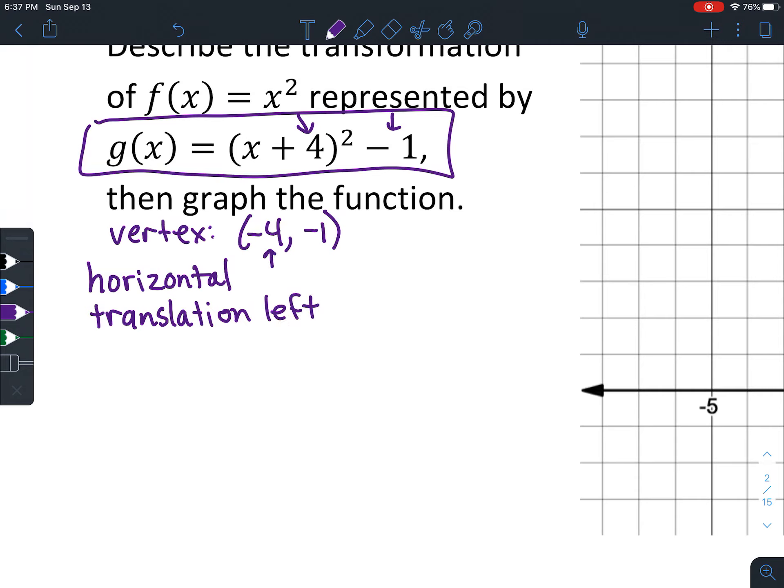So the opposite of positive 4 is negative 4. And then negative 1 is just what it looks like. What that represents is a horizontal translation left 4 units. Think about it. Negative 4 is moved to the left when you're graphing. And it also represents a vertical translation down by 1 unit.